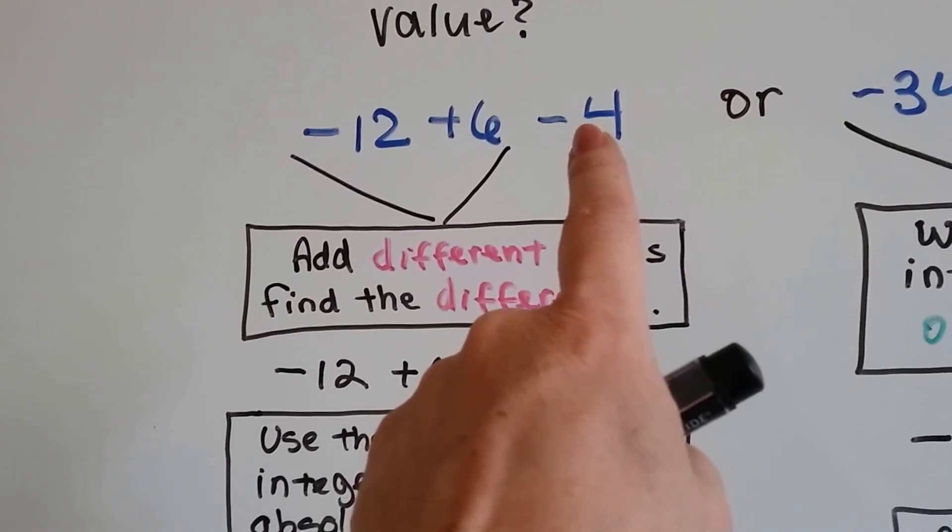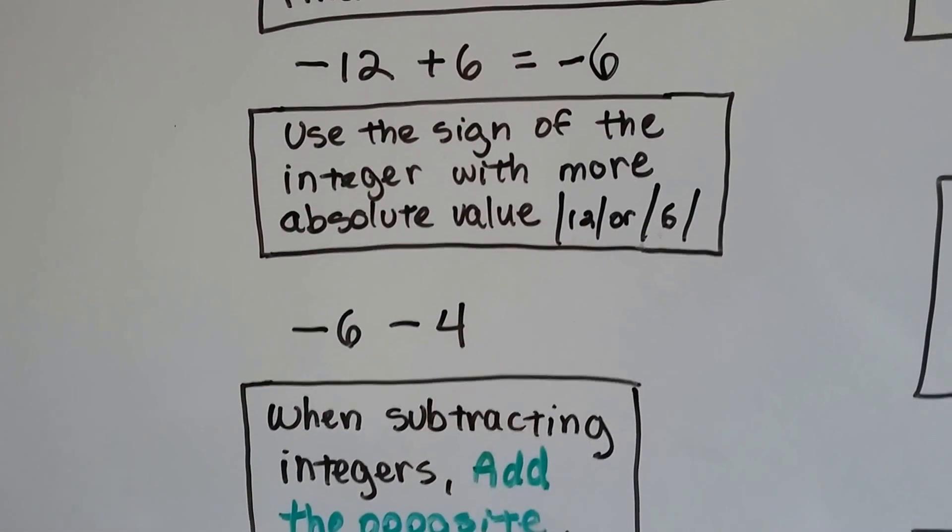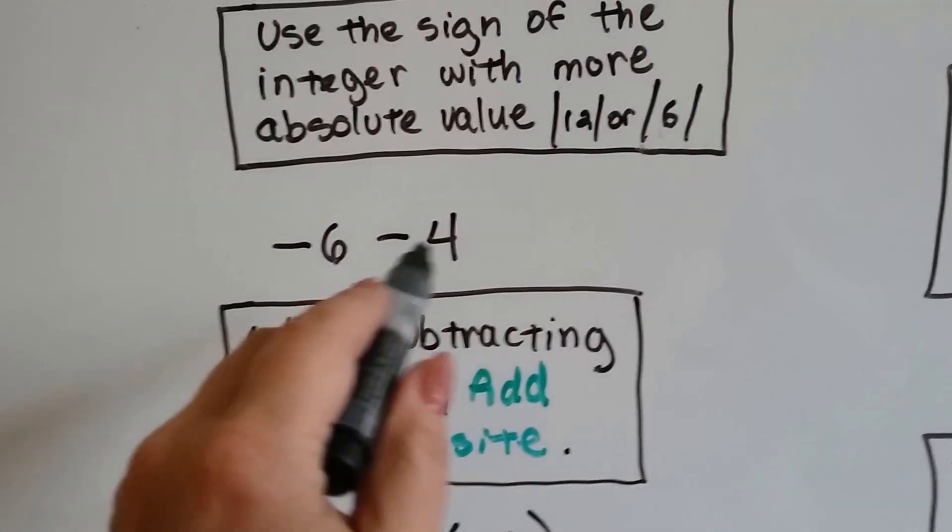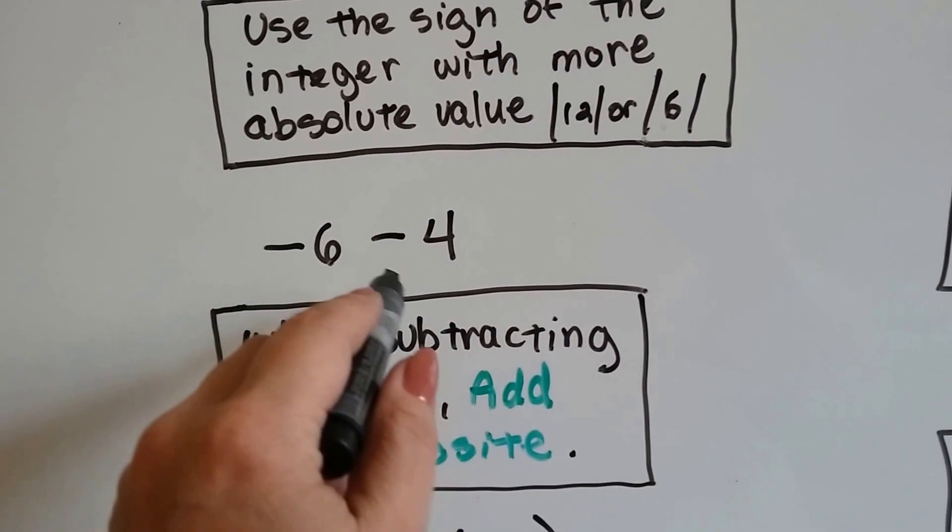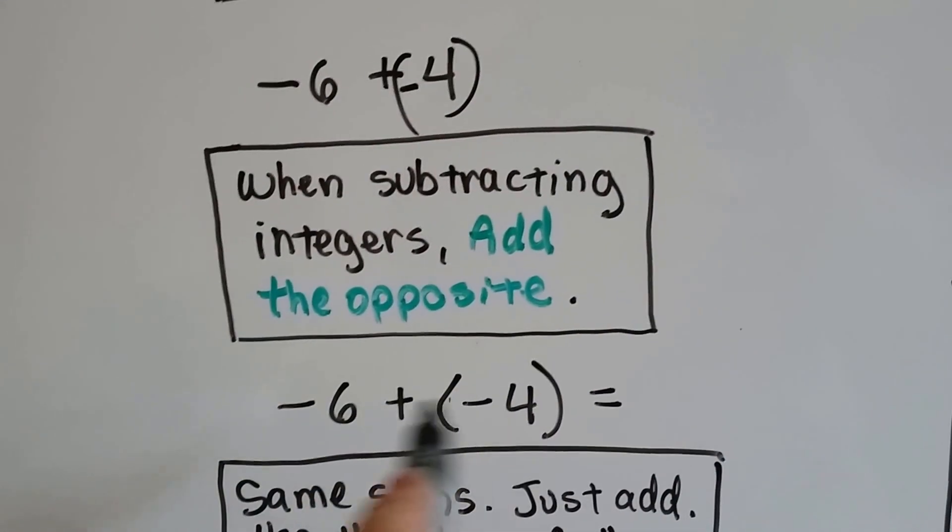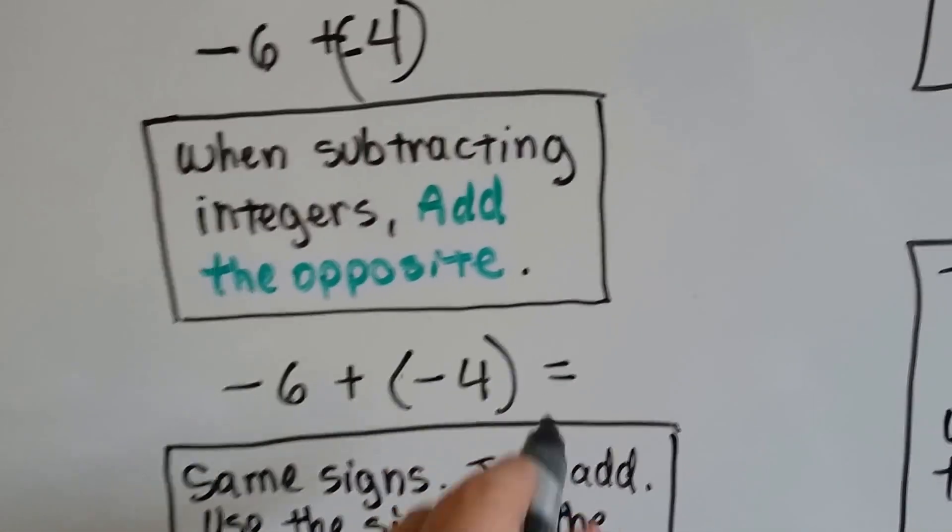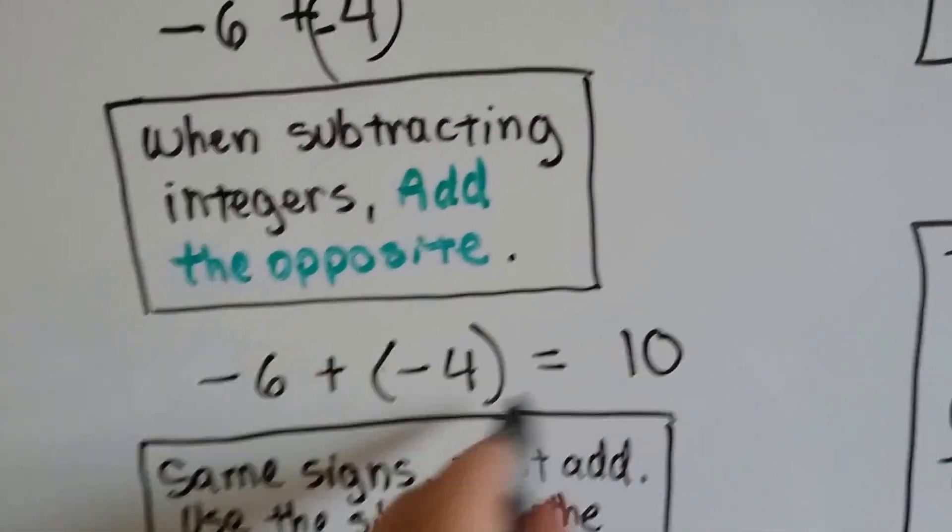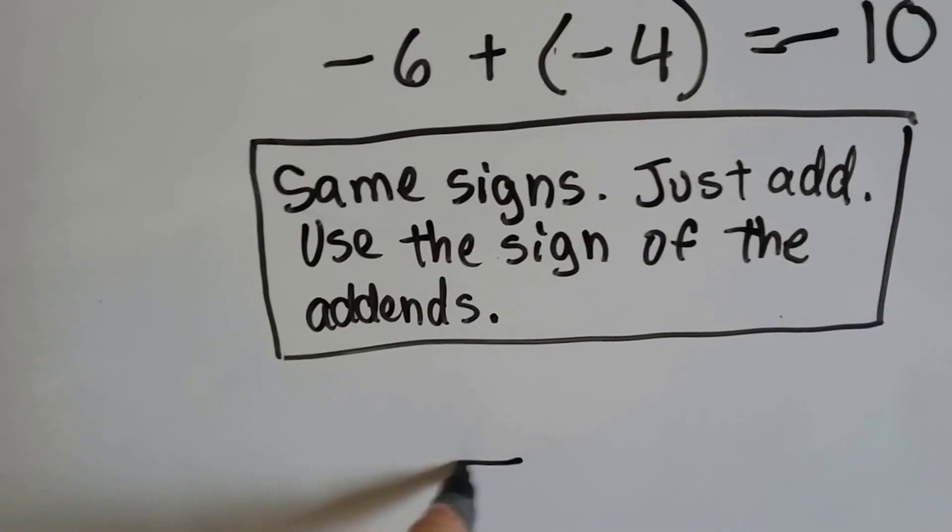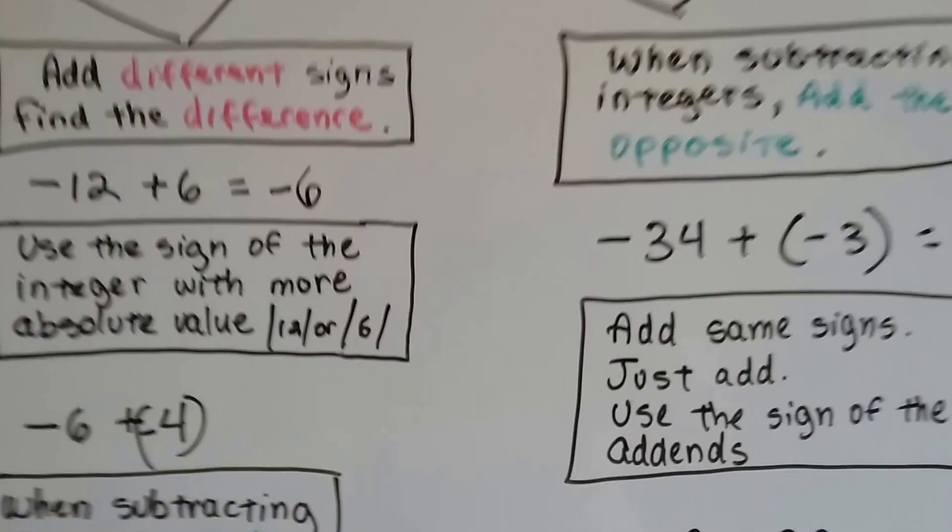But, we can't forget about this negative 4. We still need to do that, don't we? So, now we've got a negative 6 minus 4. Do you remember what we do when we subtract? We add the opposite. So, instead of taking away a positive 4, we're going to add a negative 4. So, now this is what our equation looks like. Now, we're adding like signs. So, a negative 6 and a negative 4 is 10. We take the sign of the addends. They're both negative. So, it's a negative 10. So, this one comes out as negative 10. So, remember we're going to compare it to this other one.